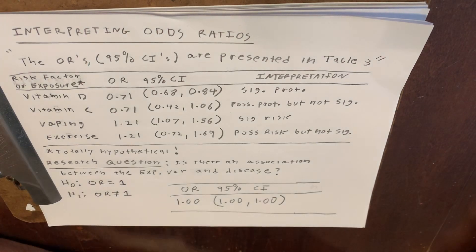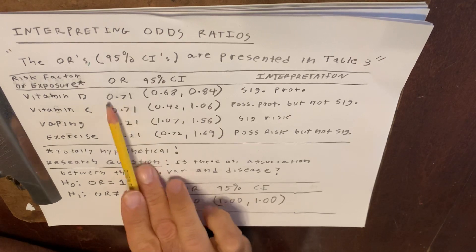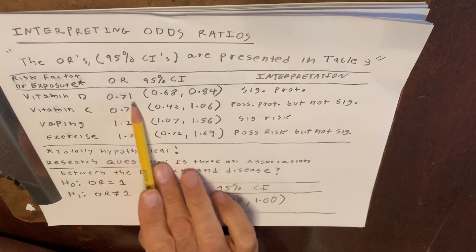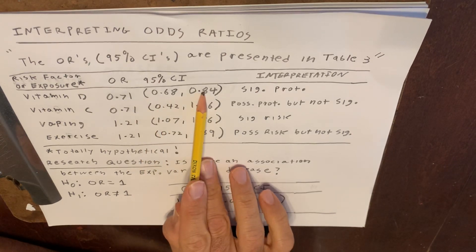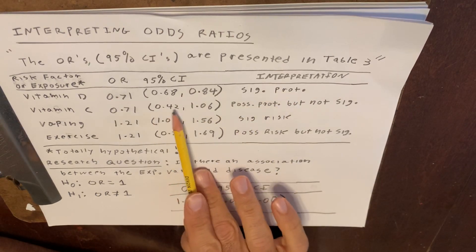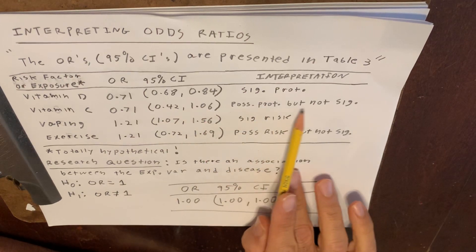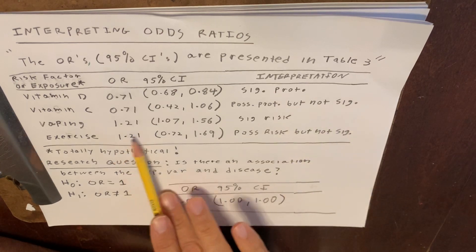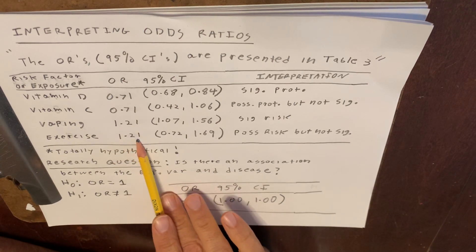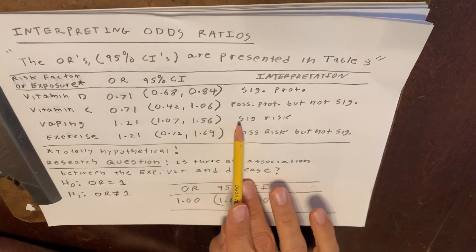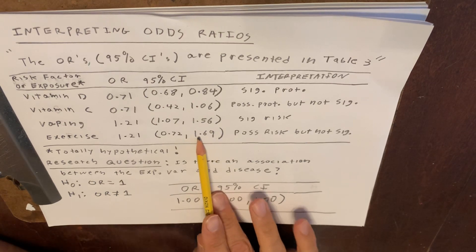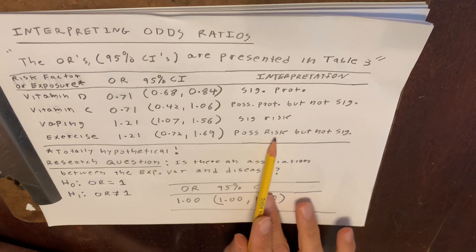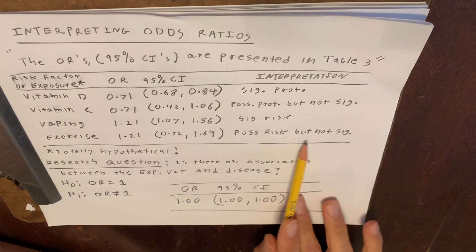Let me summarize. For point estimates less than 1 — you're thinking protection — but check the confidence intervals. If both bounds are lower than 1, that's significant protection. If one bound is lower and one is higher than 1, that's possible protection but not statistically significant. For odds ratio estimates greater than 1 — you're thinking risk. If both bounds are greater than 1, that's statistically significant risk. If one bound is less than 1 and one greater than 1, there's too much variability to conclude statistical significance.